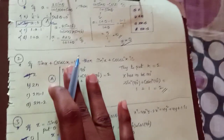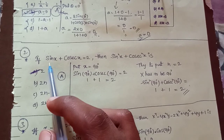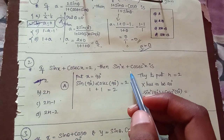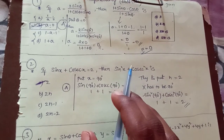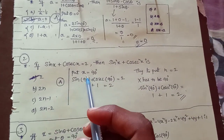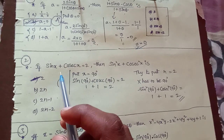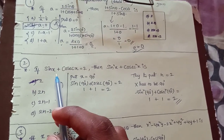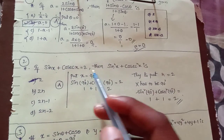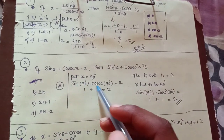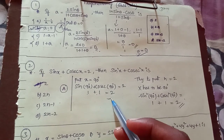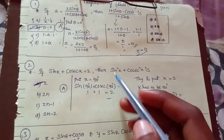Next, choose: if sin x plus cos x is equal to 2, then sin n-power of x plus cos n-power of x is equal to what? Put x equal to 90 degrees. If x is equal to 90 degrees, sin 90 plus cos 90 equals 1 plus 1 equals 2. So it satisfies.